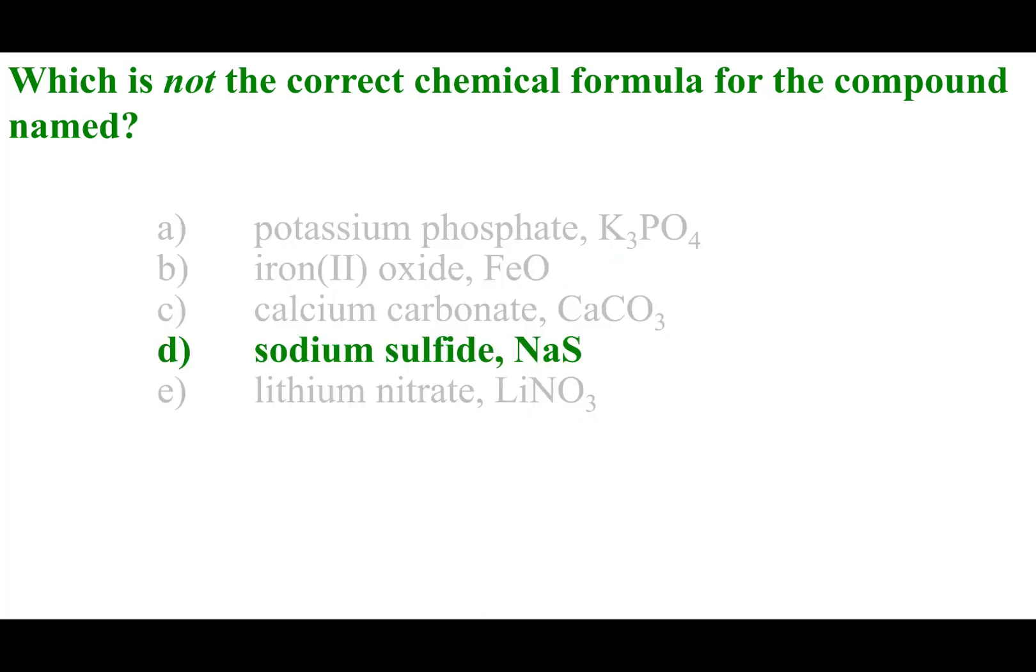So for this one, what you guys can see is that the first one was the phosphate polyatomic with potassium, so potassium phosphate. The second one, iron oxide. Well, oxygen is a two minus, iron therefore has to be two plus, so that's why I get iron(II) oxide. Calcium carbonate - again, the carbonate ion is a polyatomic ion.